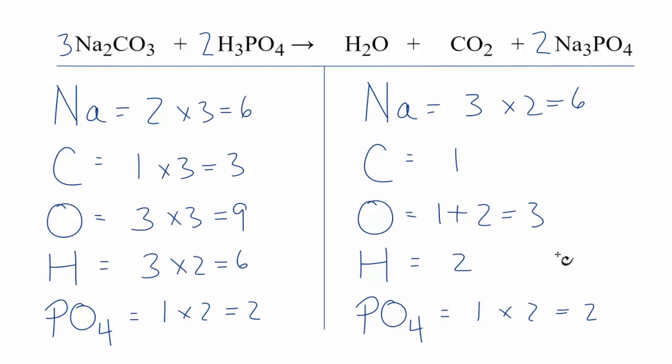Why don't we fix our carbons next? We have three here and one here, so we could just put a three right here. One times three, that gives us three. Those are balanced.